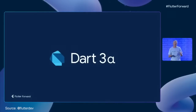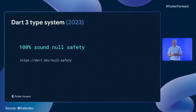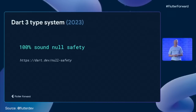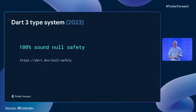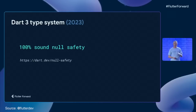Your Dart code now always runs with sound null safety, and you will no longer be able to run without it. For packages on pub.dev, 98% of the top 1,000 packages have already migrated.